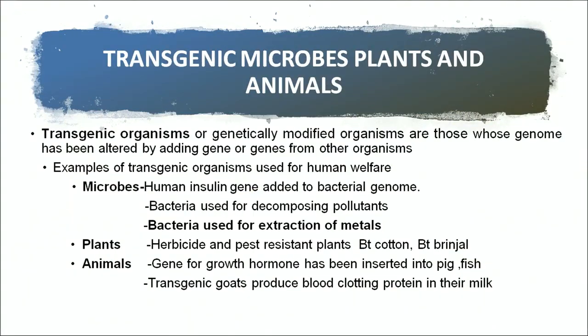Examples of transgenic organisms used for human welfare: in microbes, the human insulin gene has been added to a bacterial genome; bacteria are also used for decomposing pollutants and for the extraction of metals in metallurgy. In plants, herbicide and pest resistant plants have been produced — examples are Bt cotton and Bt brinjal, where the gene from Bacillus thuringiensis has been incorporated into the plant. In animals, the gene for growth hormone has been inserted into pig and fish to increase body size, and transgenic goats produce a blood clotting protein in their milk for patients suffering from haemophilia.